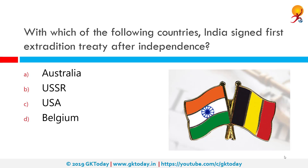With which of the following countries did India sign its first extradition treaty after independence? The correct answer is Belgium. India is able to make an extradition request to any country with which it is a treaty partner, and both countries have obligations to consider each other's requests. Extradition is not possible unless there is a treaty in place; otherwise, longer procedures are involved.